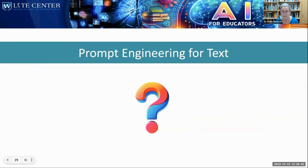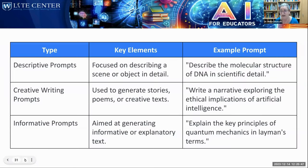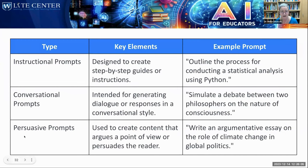We're going to continue with prompt engineering for text. The types are descriptive prompts, creative writing prompts, informative prompts, research-based prompts — you can see the key elements and example prompts depending on your field. And there are instructional prompts. I've been using instructional prompts and they really save me a lot of time, because if I had to take all the information and come up with instructions it would take much longer. The generative AI comes up with wonderful instructions — sometimes I use them, sometimes I don't.